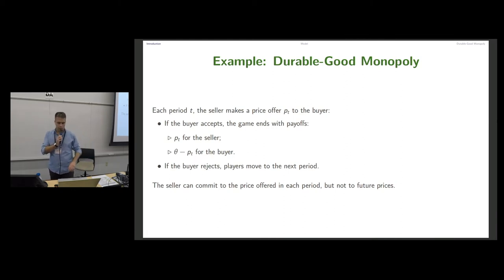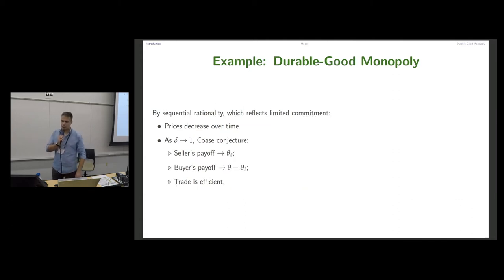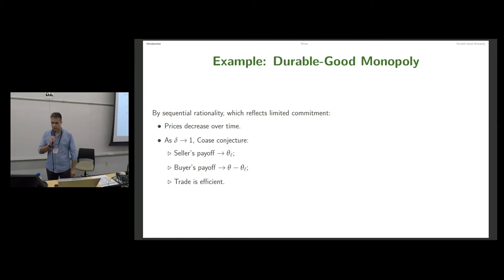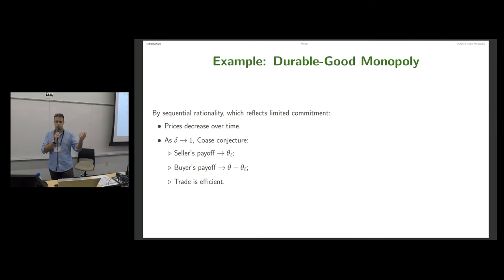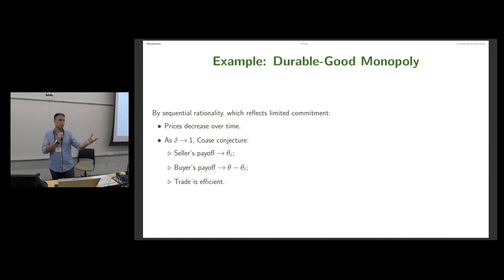If the buyer rejects, players move to the next period. The seller can commit to the price offer for the period but cannot commit to future prices — there is lack of commitment. By sequential rationality, which reflects limited commitment, prices decrease over time. As delta goes to one, we have the formalization of the Coase conjecture: the seller's payoff converges to the lowest buyer valuation, all trades occur, and the trading outcome is efficient.